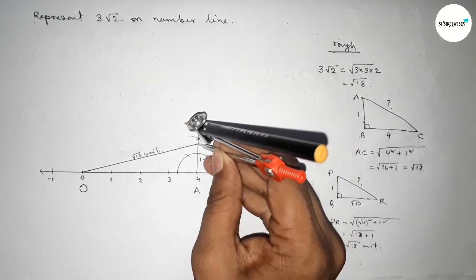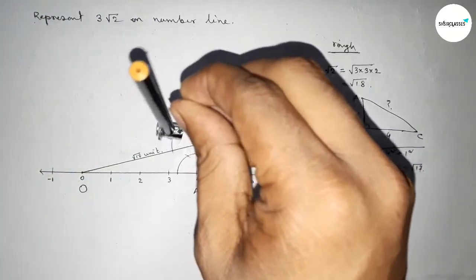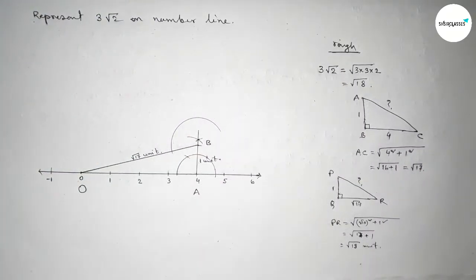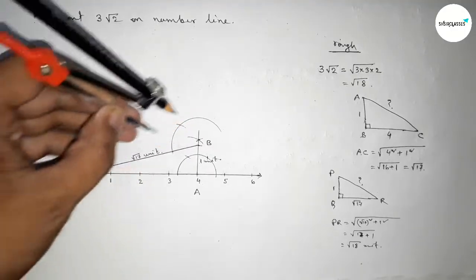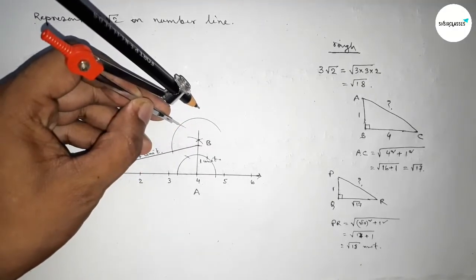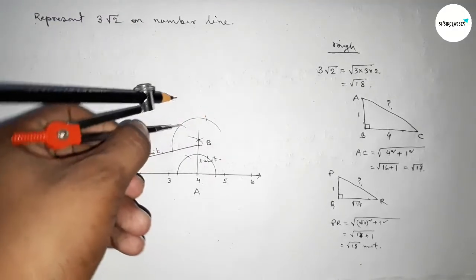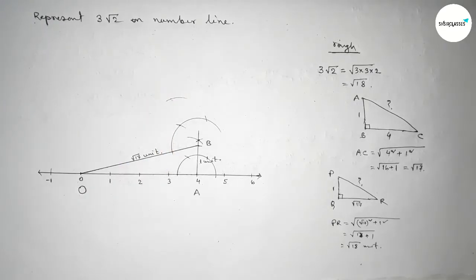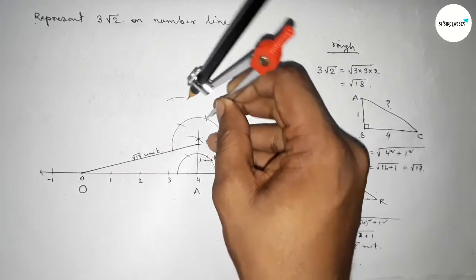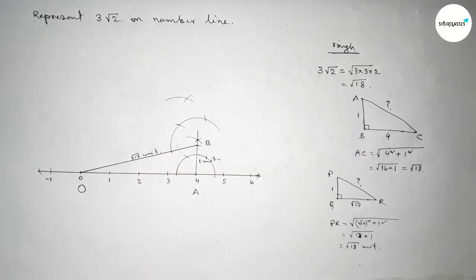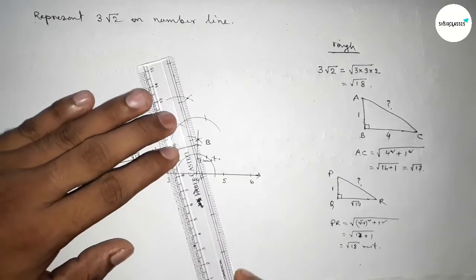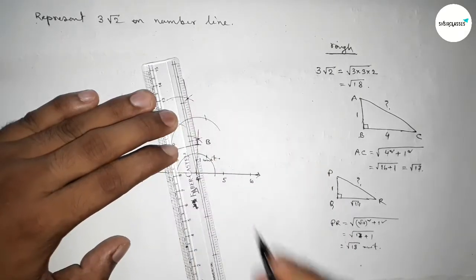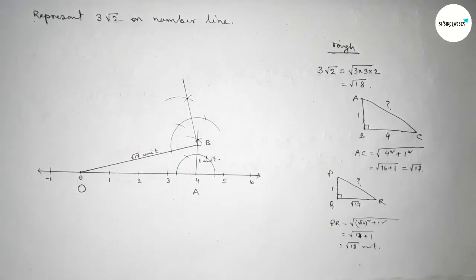First we have to draw a 90-degree angle at point B. Putting the compass at B, taking any length, drawing an arc, then with the same length cutting arcs at successive points until both curves intersect at a point, then joining this line to get a 90-degree angle.